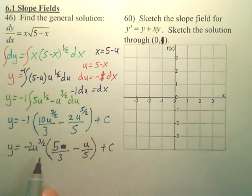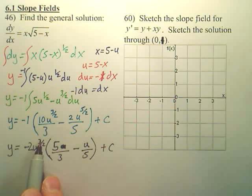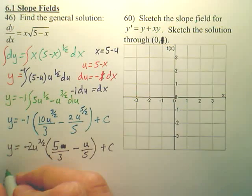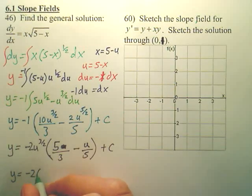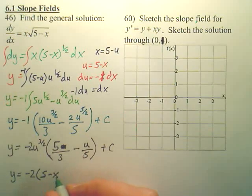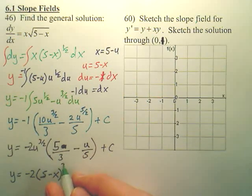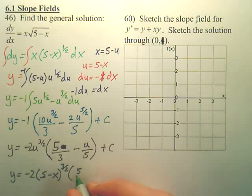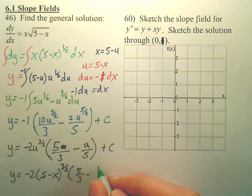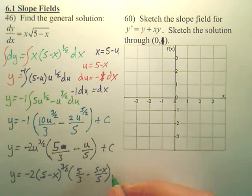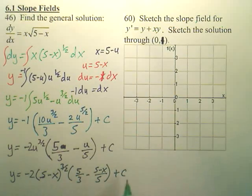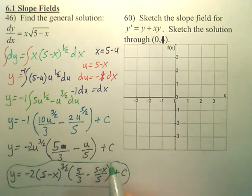So I pulled a 2 out of both tops, I pulled a u to the 3 over 2, this is your answer, now you can plug all your u's in. And you could probably simplify it a whole bunch of other different ways, but your final answer, according to what we have here, is 5 minus x to the 3 over 2, times 5 thirds minus 5 minus x over 5, plus c. Again, you could constantly keep simplifying this down, I'm not going to go that far.